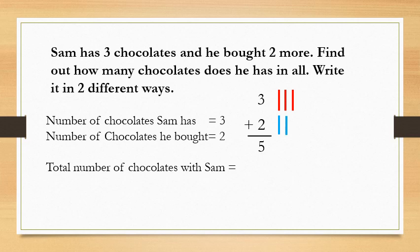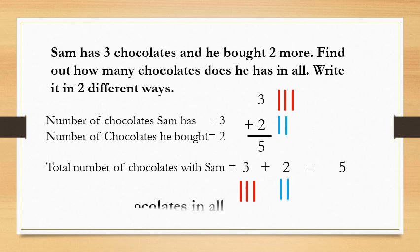Now let's do in horizontal method — writing the numbers side by side. 3 plus 2. Draw 3 lines: 1, 2, 3. Then draw 2 lines: 1, 2. Count the total number of lines: 1, 2, 3, 4, 5. The answer is 5. So we can say that Sam has 5 chocolates in all.